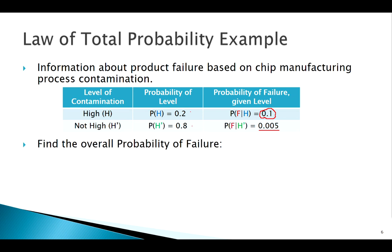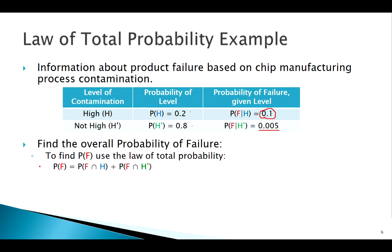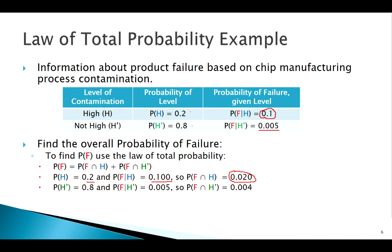We want to use the Law of Total Probability to find the probability of failure. We know the probability of high or not-high contamination, and the probability of failure given each contamination level. So the probability of failure equals the probability of failing and having high contamination plus the probability of failing and not having high contamination. From the table: 20% high contamination, 10% of those fail, so 2% of chips fail with high contamination.